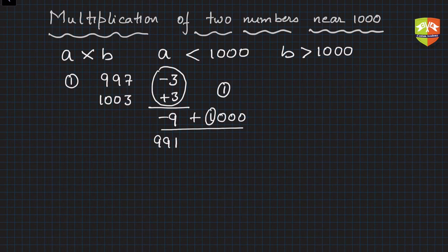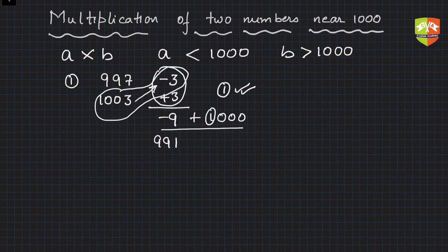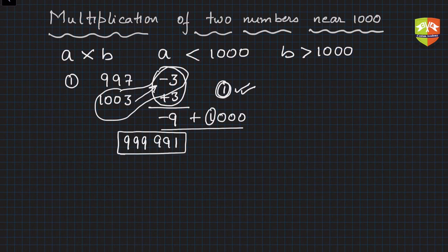The only thing remaining is to perform the diagonal operation: 1003 plus minus 3 is 1000. But you have to take care of that 1 as well, just like we did in the case of hundreds. Whatever is the sum here, you just reduce it by one. The sum here is 1000, reduce it by one, you will get 999. So the product of 997 and 1003 is 999,991.